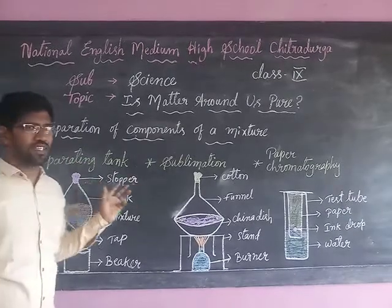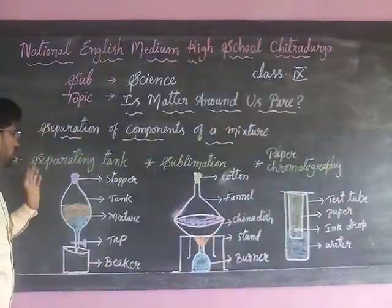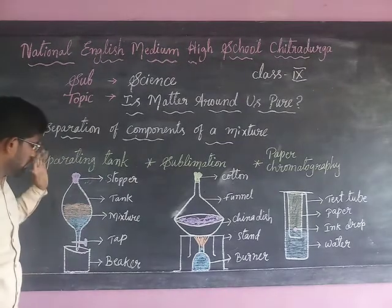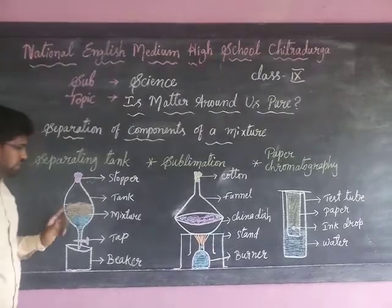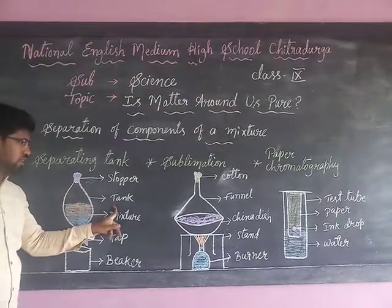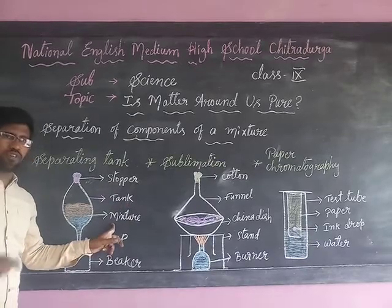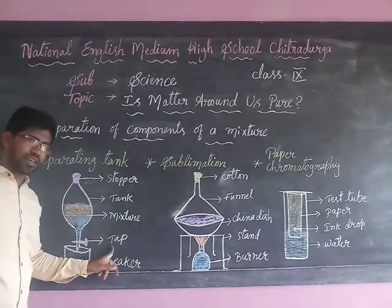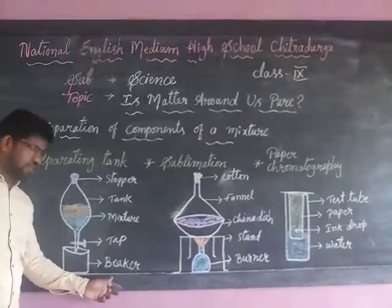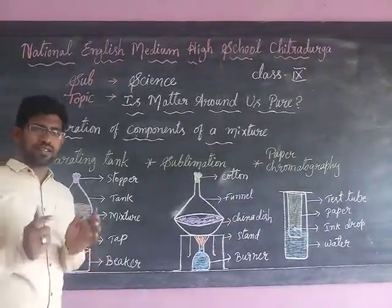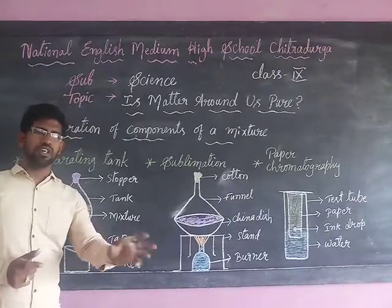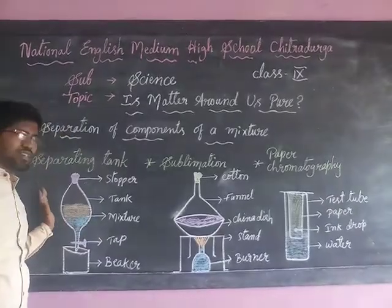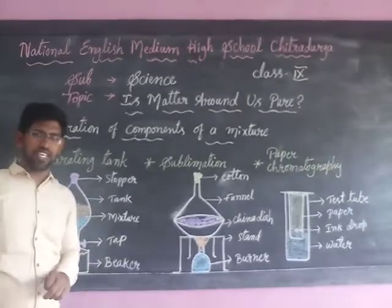These are the three different methods of separation of mixtures. The first one is the separation of two immiscible liquids by using a separating funnel. This separating funnel uses a stopper, and contains the mixture of two immiscible liquids such as oil and water, and a tap to separate the mixtures and collect the separated components using two different beakers.